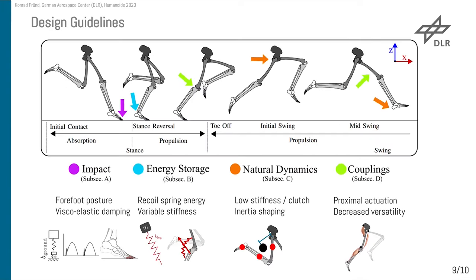To wrap up: for impacts, use a forefoot posture and viscoelastic damping. For energy storage, recall the spring energy and use variable stiffness. For natural dynamics, use low stiffness or a clutch mechanism and shape your inertia. For couplings, use proximal actuation, but take care as it might decrease your versatility.